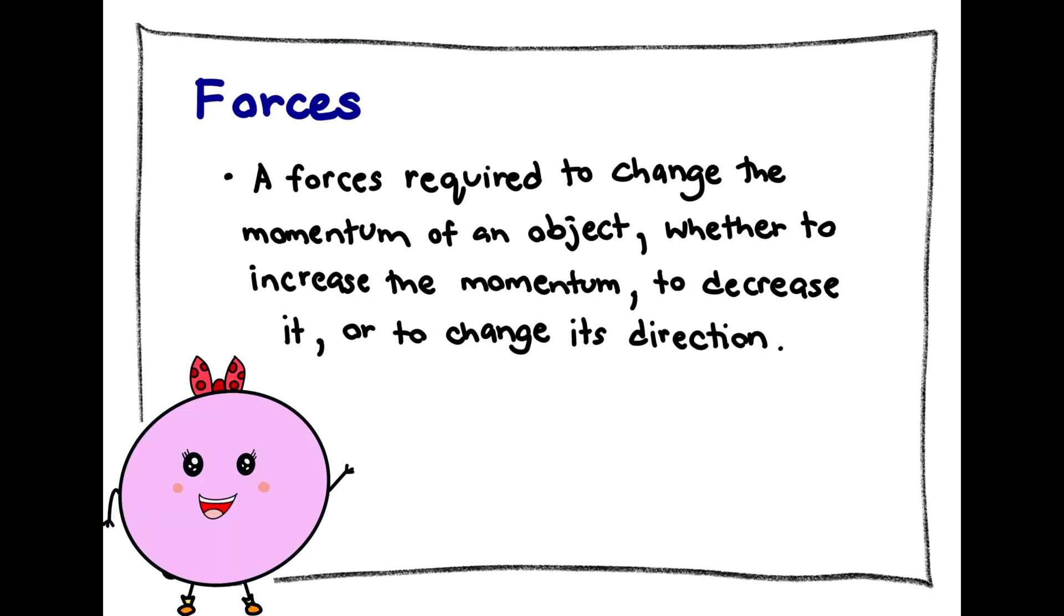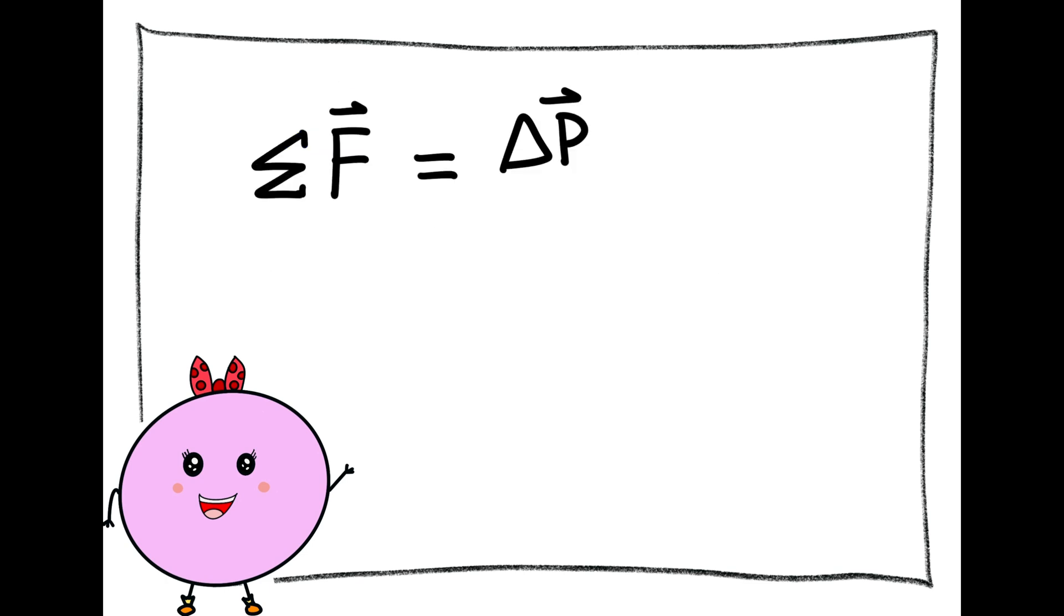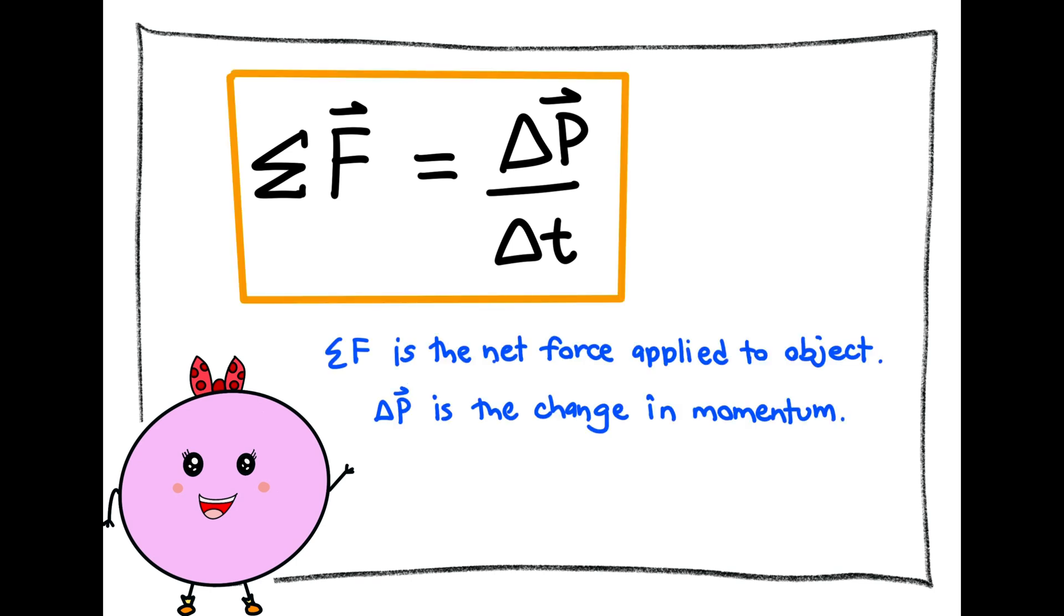A force is required to change the momentum of an object, whether to increase the momentum, to decrease it, or to change its direction. The rate of change of momentum of an object is equal to the net force applied to it. Therefore, we can write the equation as force equals the change in momentum over the time in that interval.